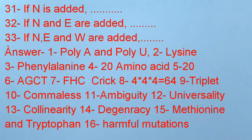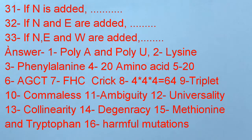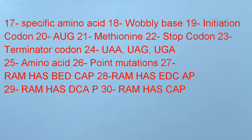Answers: 1) Poly-A and Poly-U. 2) Lysine. 3) Phenylalanine. 4) 20 amino acids. 5) 20. 6) A, G, C, T (nucleotides). 7) Crick. 8) 64. 9) Triplet. 17) Specific amino acids. 18) Wobble base. 19) Initiation codon. 20) AUG — methionine.